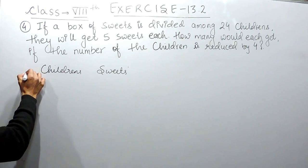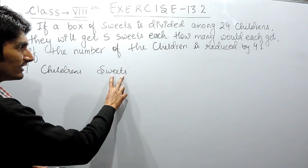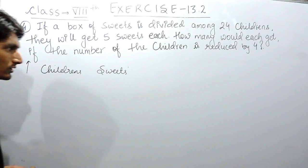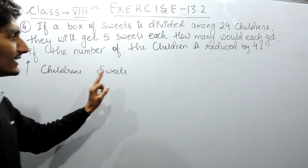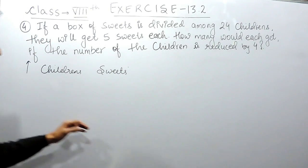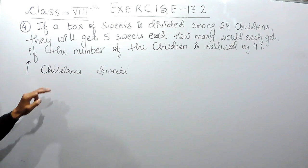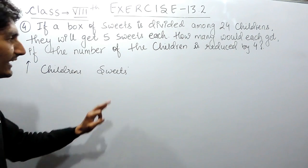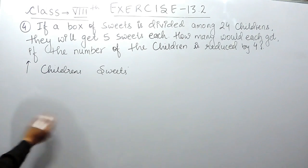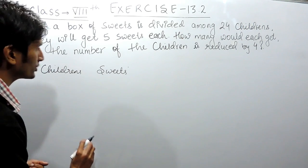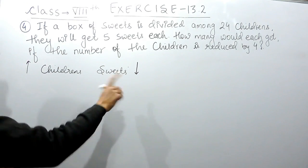First, find out whether this is direct or inverse proportion. If I increase the number of children, the number of sweets each person gets should decrease. Clearly, if there are more children, each gets fewer sweets. And if many students are absent — meaning the number of children has decreased — then each person gets more sweets. So this is a classic example of inverse proportion: when the number of children increases, the sweets per person decreases.